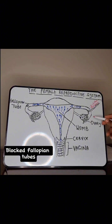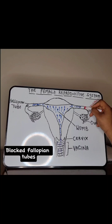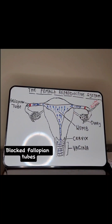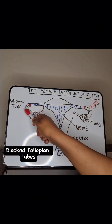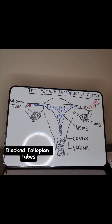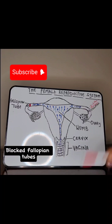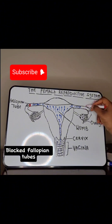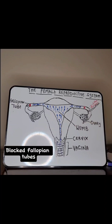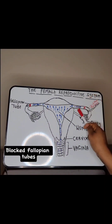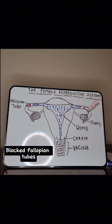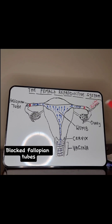Let's talk about blocked fallopian tubes. You've released your egg, but there is something blocking your tubes — there is no way the sperm cells will meet your egg. If only one tube is blocked, any month you ovulate from the open tube there is a possibility you'll get pregnant. But if both tubes are blocked, no matter how good your ovulation is the sperm cannot meet your egg, so pregnancy will not happen.